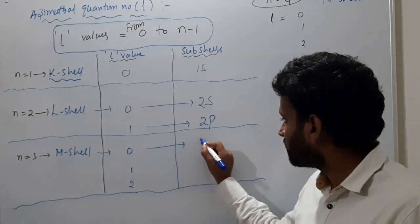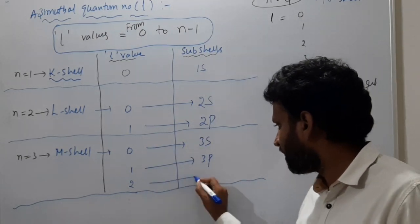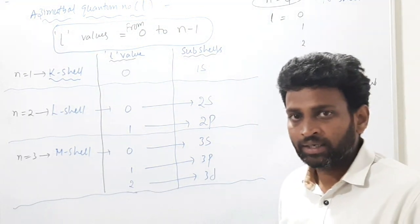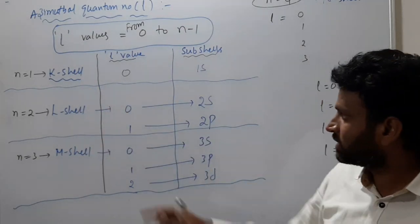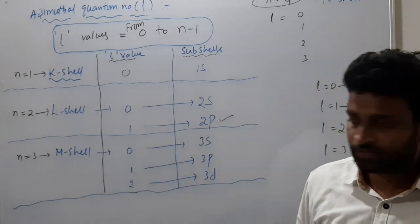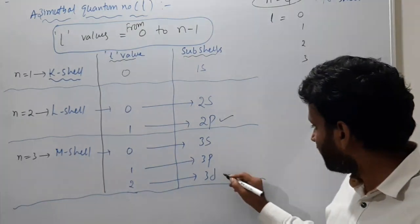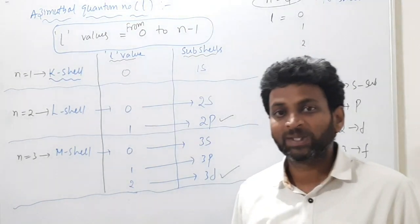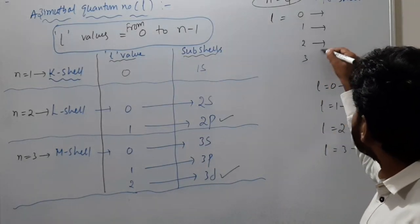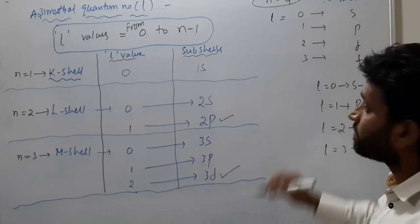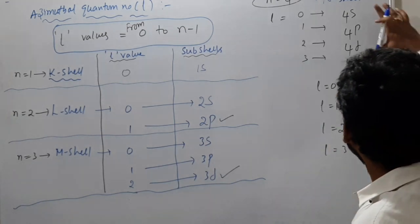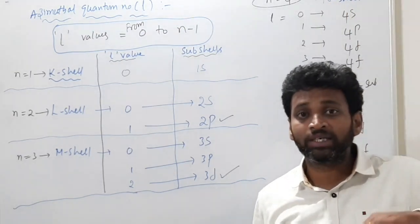For the fifth shell (O shell): l values are 0, 1, 2, 3, 4, giving subshells 5s, 5p, 5d, 5f, 5g. Total subshells equal the shell number. The 1s subshell belongs to K shell and 2s belongs to L shell — both are S subshells but differ in which shell they belong to, which is why we write the shell number in front. The subshells present in each shell have been covered.